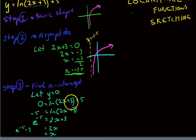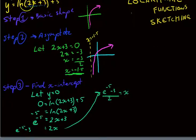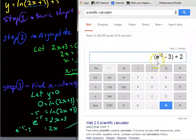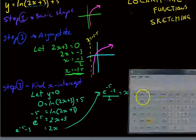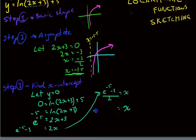Let's make ourselves some more room over here. e to the negative 5 minus 3 over 2 equals x. And we can get our calculator out and see what... So I've just typed it in here. e to the negative 5 minus 3 divided by 2. That should give us negative 1.49. That's negative 1.4966. Just get rid of my calculators here. x equals negative 1.4966.